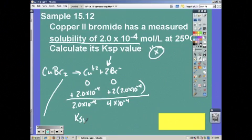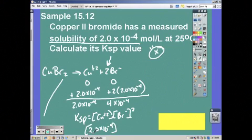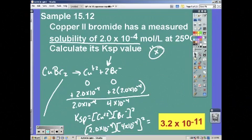Now you need to write your equilibrium expression. Remembering that because bromine has a coefficient of 2, it needs to be squared. Plug in your values and you should get a Ksp of 3.2 times 10 to the negative 11.